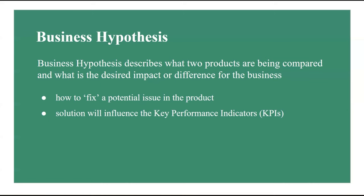This hypothesis is usually set as a result of brainstorming and collaboration between the product team and data science team. The idea is to decide how to fix a potential issue in a product where a solution will influence the KPIs of interest. We place the hypothesis subject to rejection under the null hypothesis H0, while the desired hypothesis we would like to accept as a result of A/B testing goes under the alternative hypothesis H1.